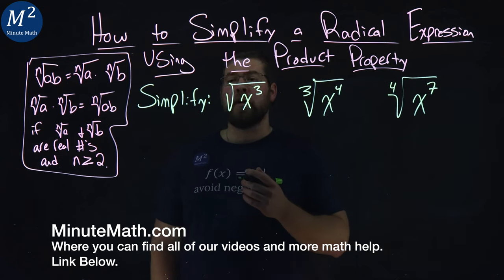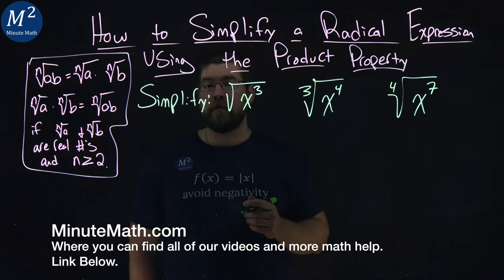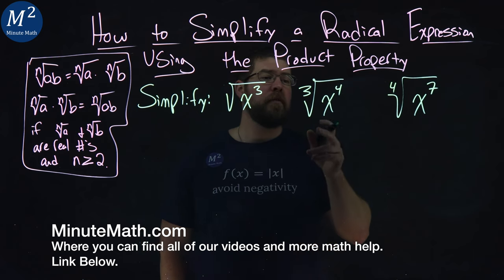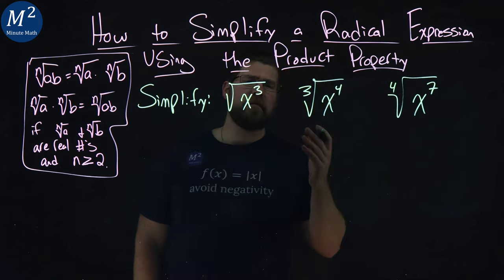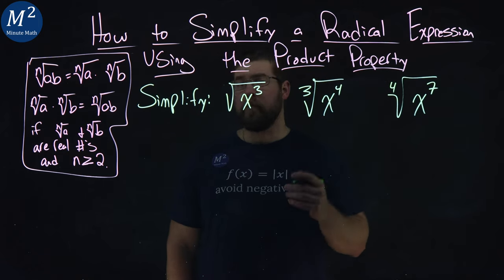We're given this problem right here. Simplify the square root of x to the third power, the third root of x to the fourth power, and the fourth root of x to the seventh power. And we're going to solve this using the product property.